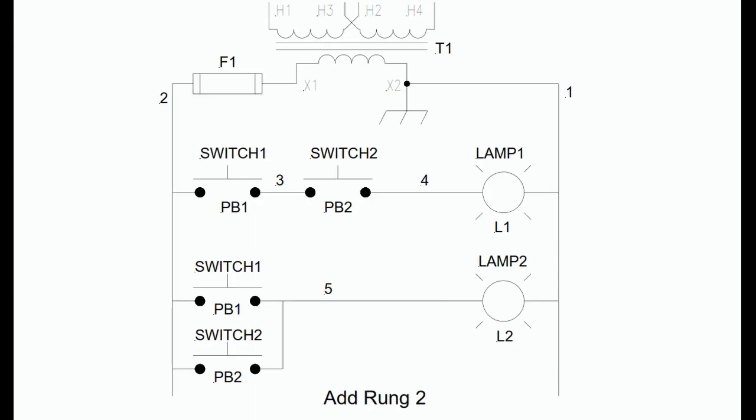When we have two or more components in parallel in a rung, each parallel path is called a branch. In our diagram, rung 2 has two branches, one with PB1 and the other with PB2. It is possible to have branches on the load side of the rung also.